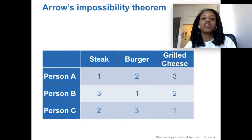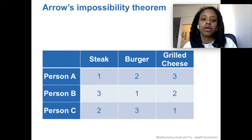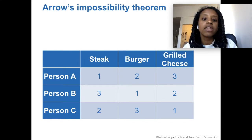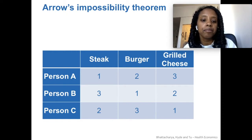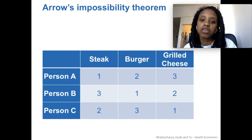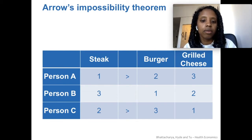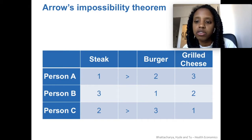Let's first consider the steak and the burger. Out of these three people, each person ranks the options as first best, second best, and third best. Person A prefers steak to a burger, and person C also prefers steak to a burger. So that's two out of three people — most people — preferring steak to burger.